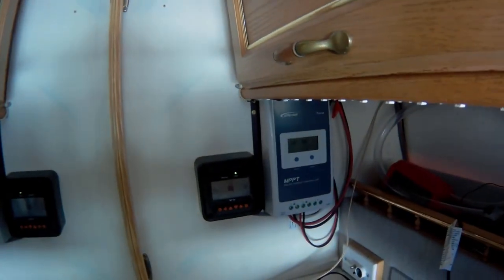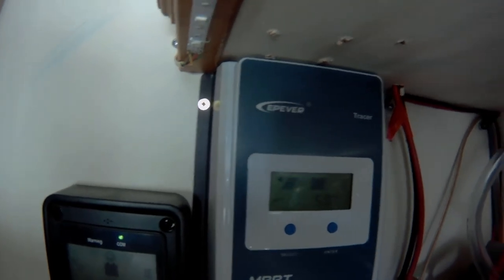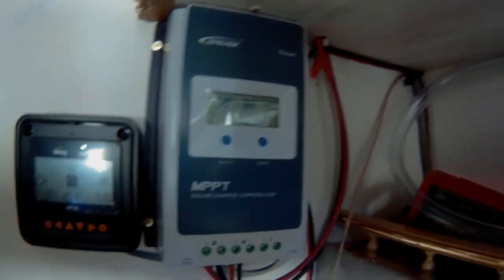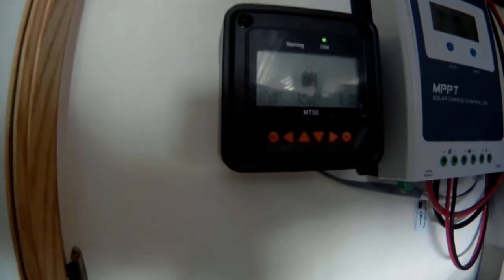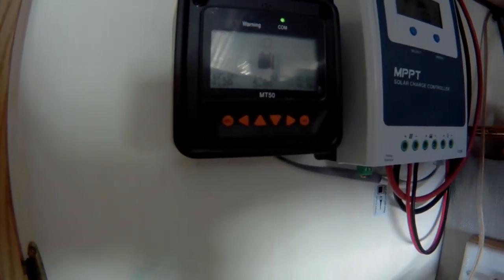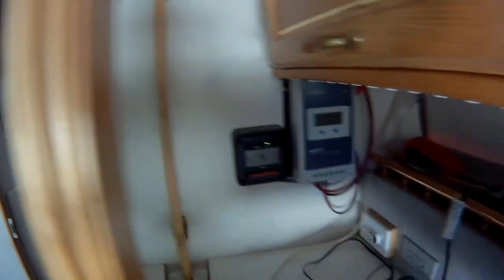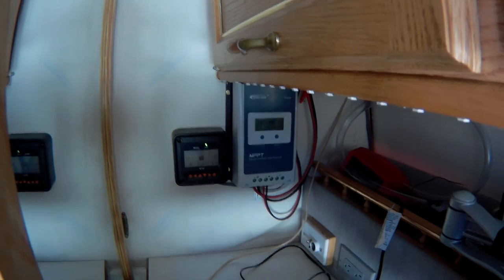If anybody has any ideas on what should be happening, it's an EP Ever tracer. I think it's a 30 amp controller with the MT50 panel. So if anybody has any ideas, I'm getting no warnings, no nothing. So either it's good or it's good. Anyway, let me know.